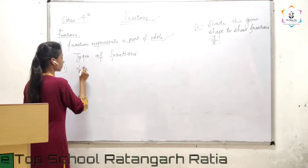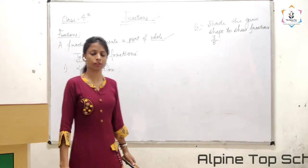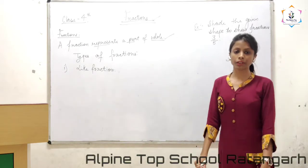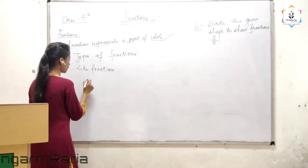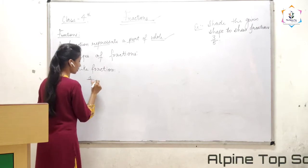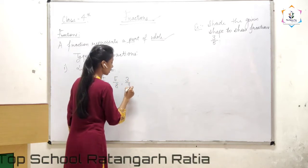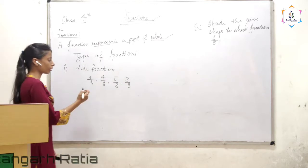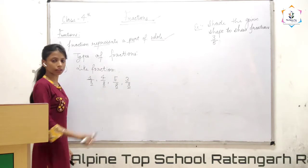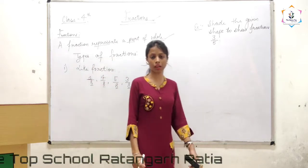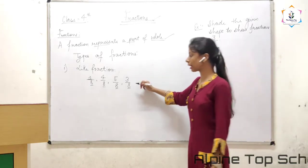First, I have like fractions. Which type of fractions do we say are like fractions? Those fractions which have the same denominator — like 1 by 8, 4 by 8, 5 by 8, 3 by 8. As you can see, the denominator values are all the same. So we say these type of fractions are like fractions — two or more fractions which have the denominator value equal.